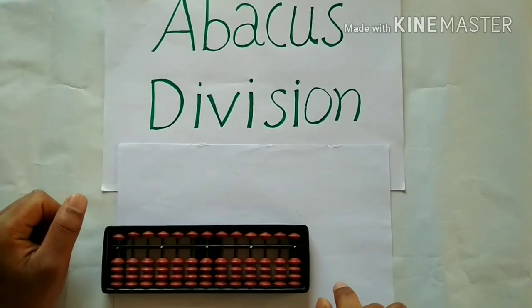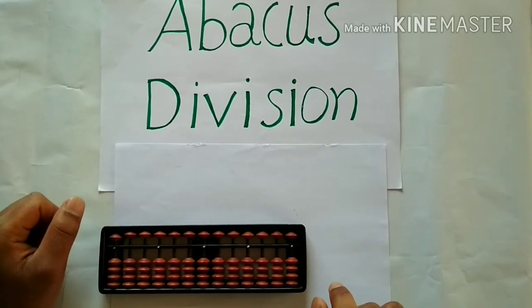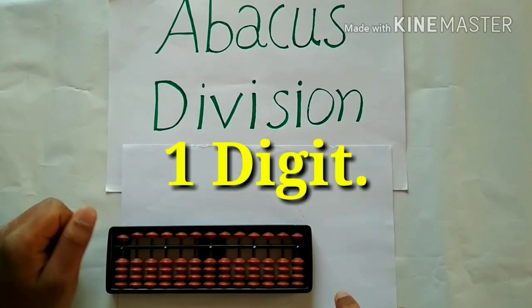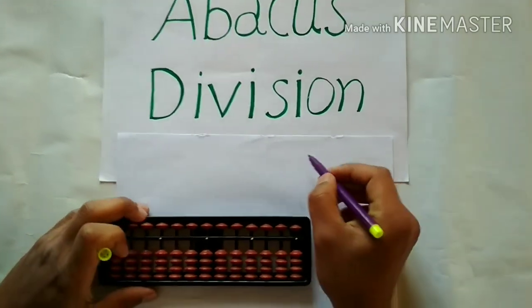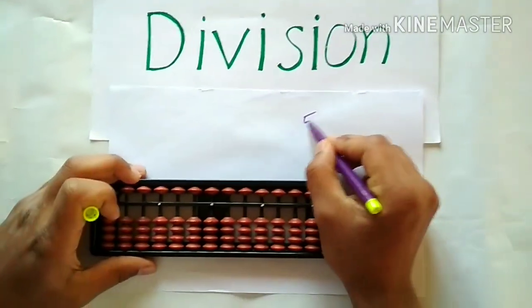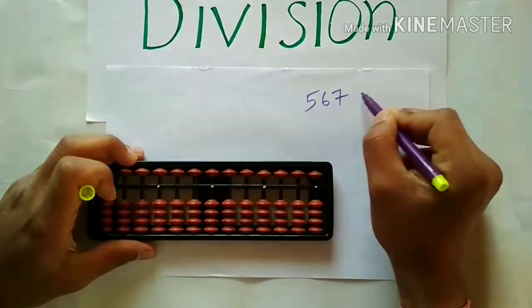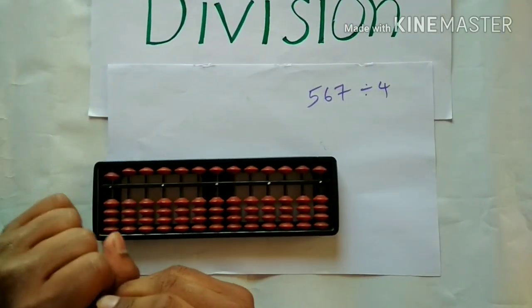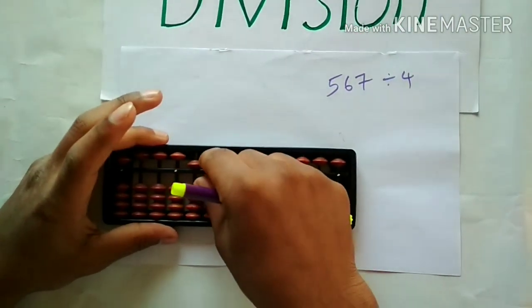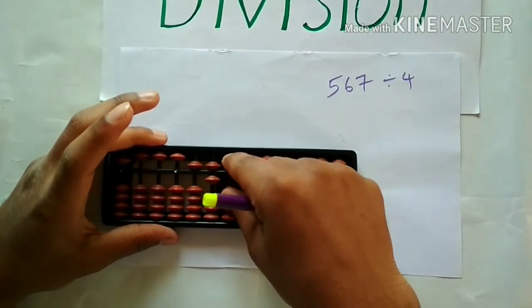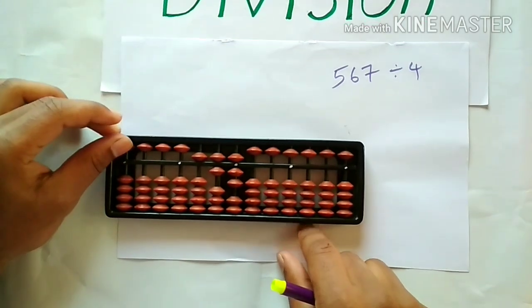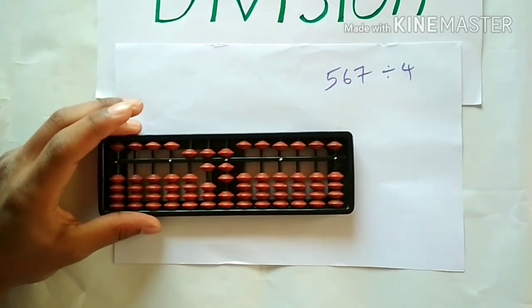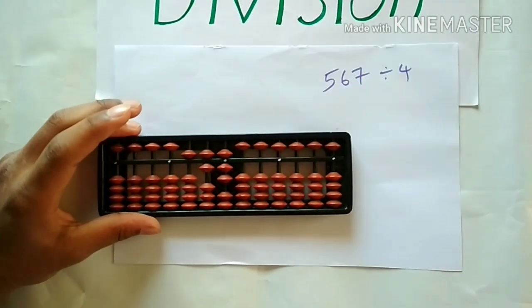Hello viewers. In this video we are going to learn abacus division of 3 digit by 1 digit. Let's start with an example. Let's divide 567 by 4. Let's place 567 on the abacus like this. Before starting a division process, be sure that you are thorough with the multiplication tables from 1 to 9.